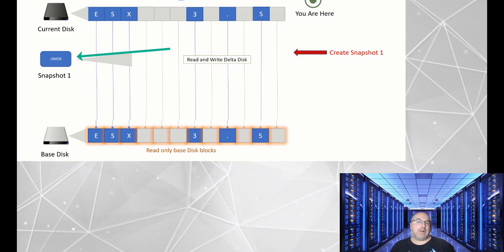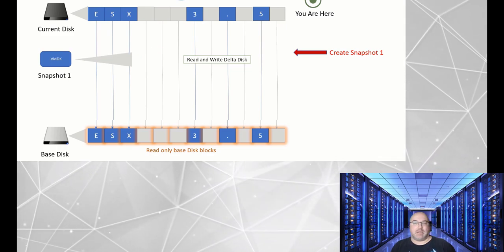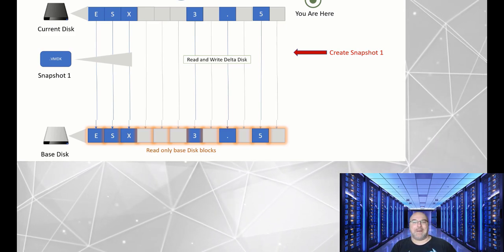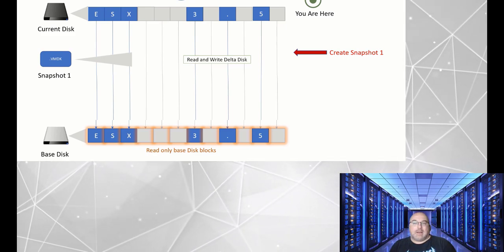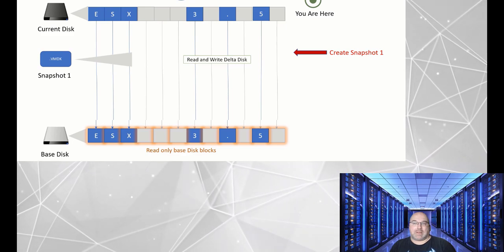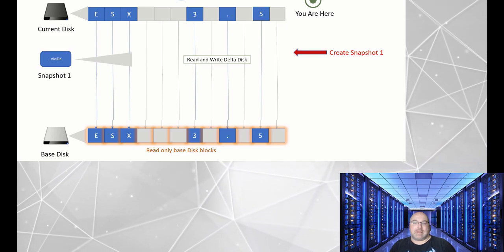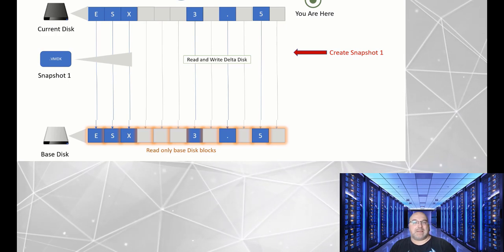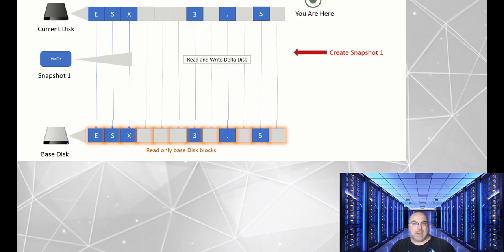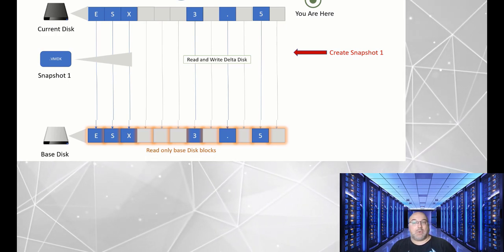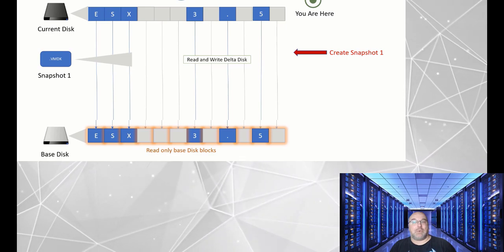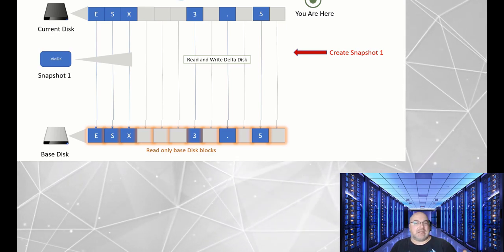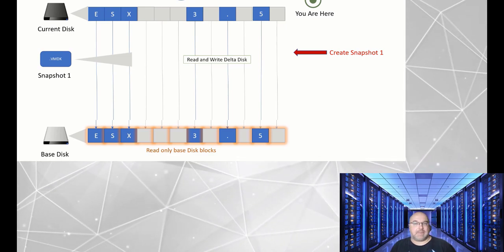In our visual representation, you see the screen — the blue blocks signify read-only blocks from the base disk, while the gray blocks represent empty read-only blocks from the base disk.